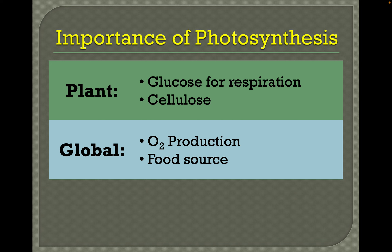The importance of photosynthesis: for plants, they need the glucose produced by photosynthesis for cell respiration, and they use it also to build their bodies and produce cellulose, which makes the structure of a plant. On a global scale, photosynthesis is important for transforming the atmosphere and producing oxygen gas. It also provides a food source for everything that's a heterotroph — organisms that can't do photosynthesis — making photosynthesizers the base of the food chain.